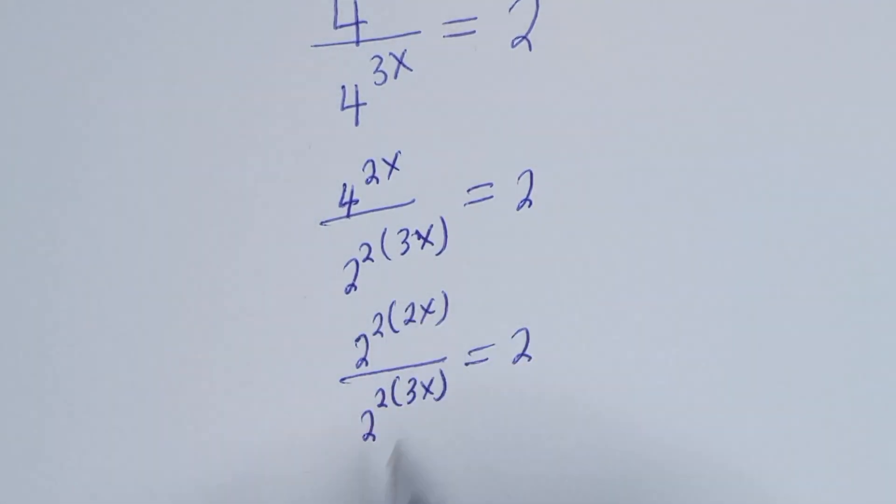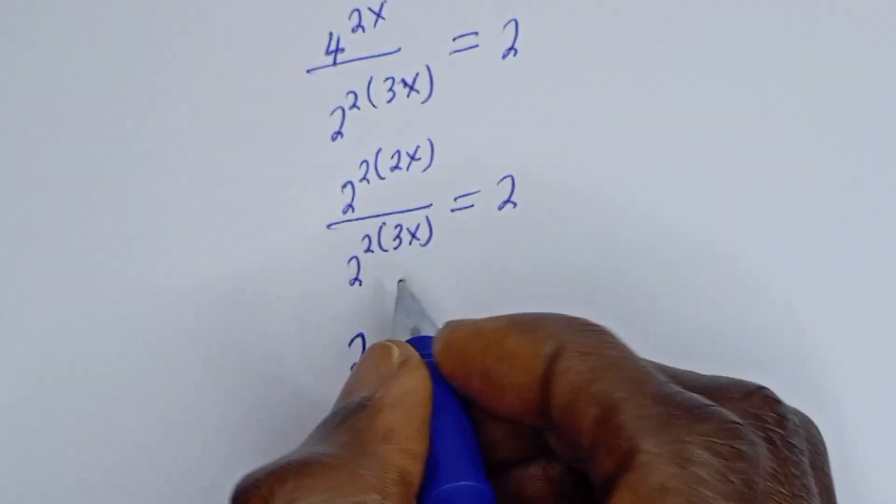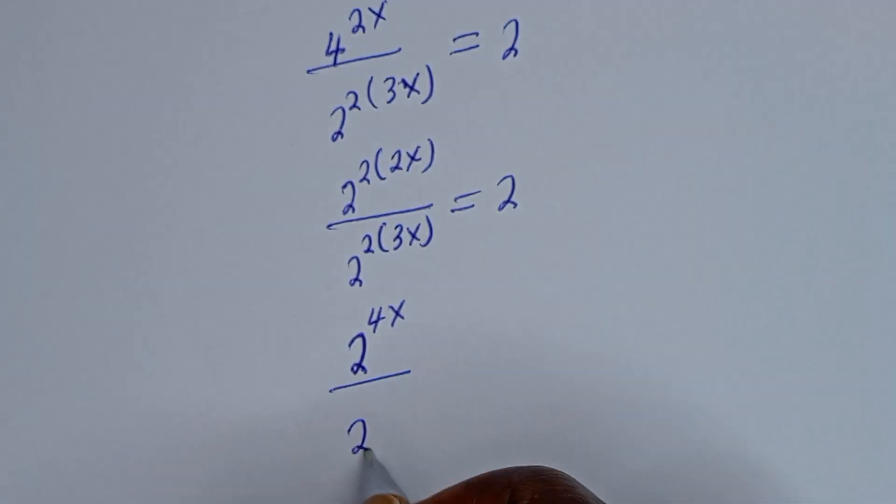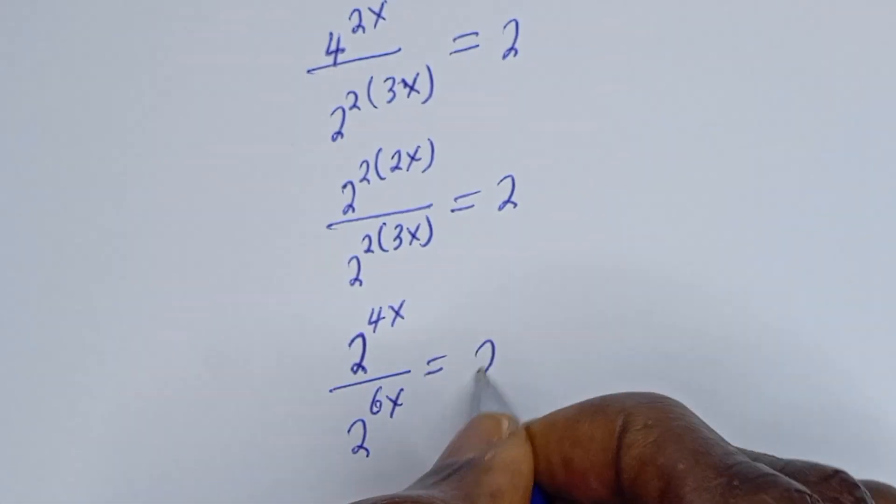Let's open this bracket. We have 2 to the power of 2 times 2s, that is 4s, divided by 2 to the power of 2 times 3s, which is 6s, is equal to 2.